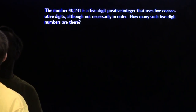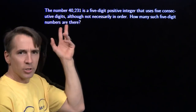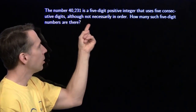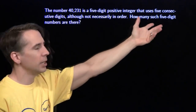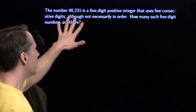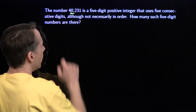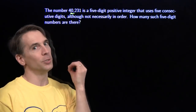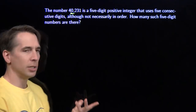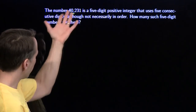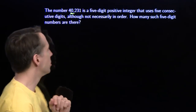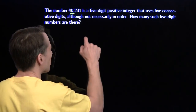Ready for our next problem. We've got the number 40,231 — it's a five-digit positive integer that uses five consecutive digits, although not necessarily in order. We want to count how many such five-digit numbers there are. We have to be careful here — they gave us an example that includes zero, and we have to be careful about zero because you don't want zero at the front of your number, because then you're not going to have a five-digit integer.